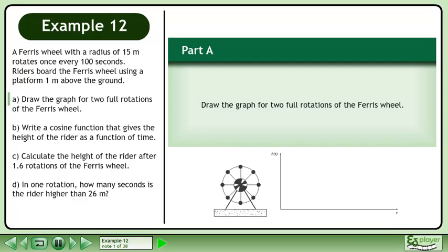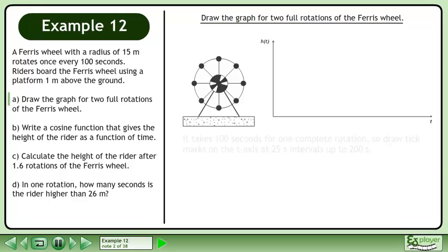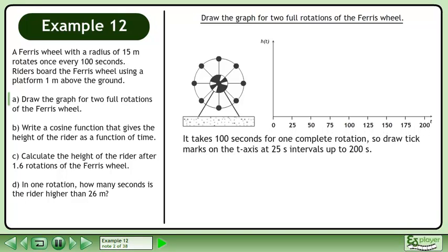In part A, draw the graph for two full rotations of the Ferris wheel. It takes 100 seconds for one complete rotation, so draw tick marks on the t-axis at 25 second intervals up to 200 seconds.